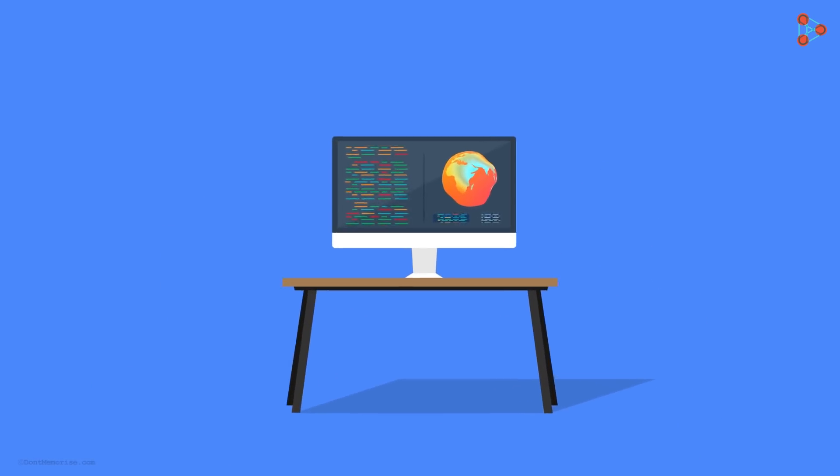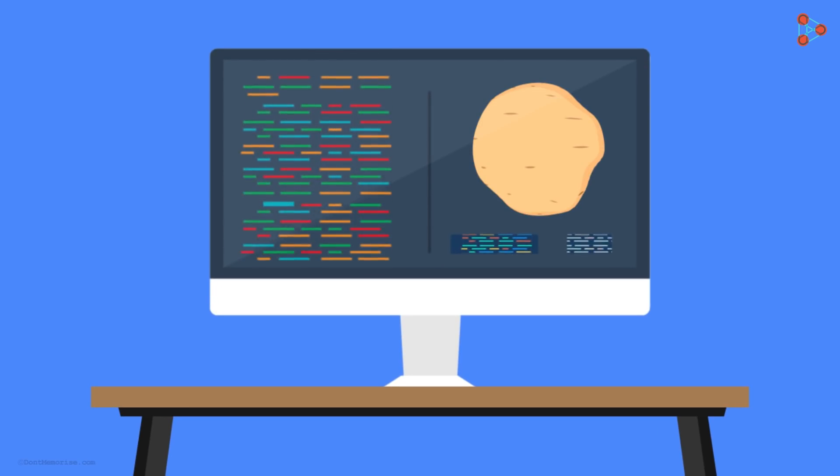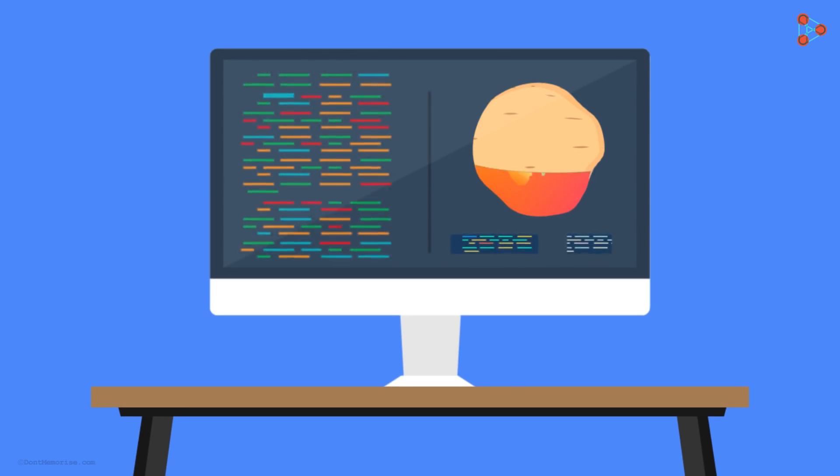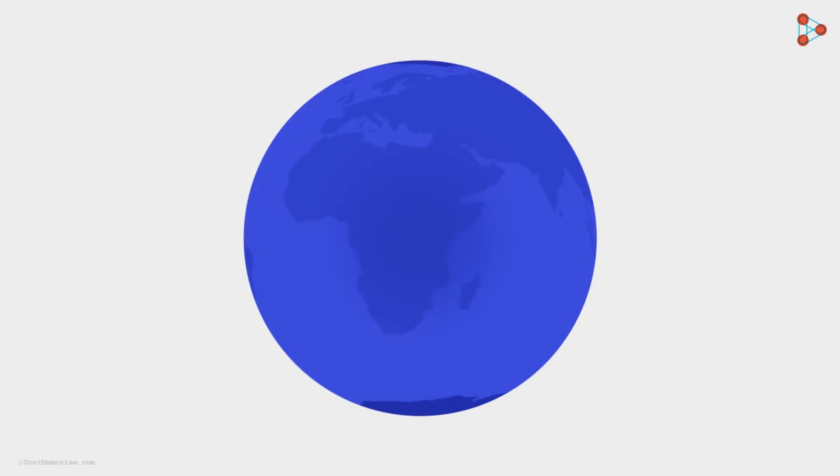According to many computer generated models, the true shape of the earth is like that of a potato. But to understand the solution to this problem, we will assume that the earth is a large spherical ball.